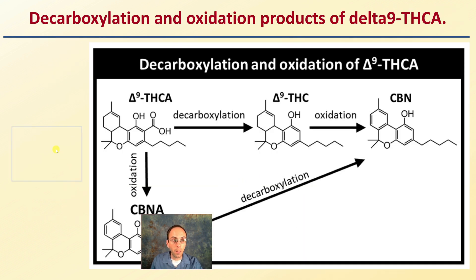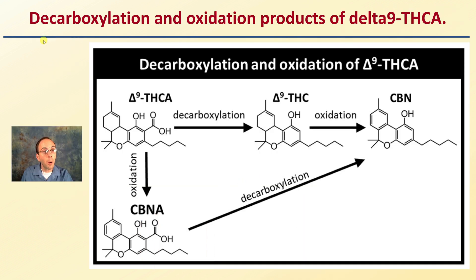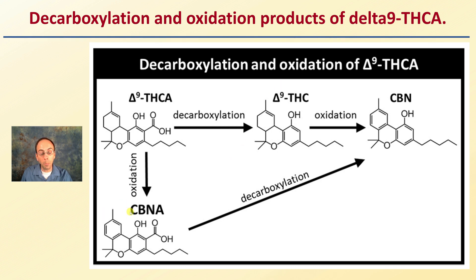First off, let's start with some of the basics. We're looking at decarboxylation and oxidation products of Delta-9 THCA. THCA oxidation converts it to CBNA, and decarboxylation produces Delta-9 THC. If we decarboxylate CBNA, we get CBN. If we oxidize Delta-9 THC, we also get CBN.